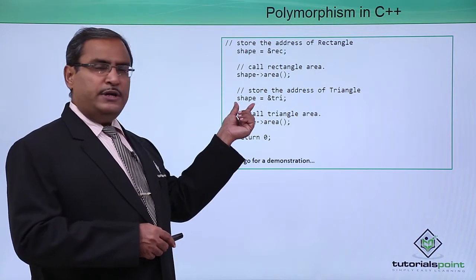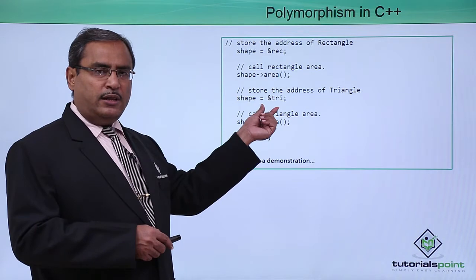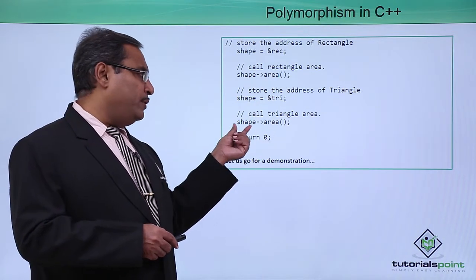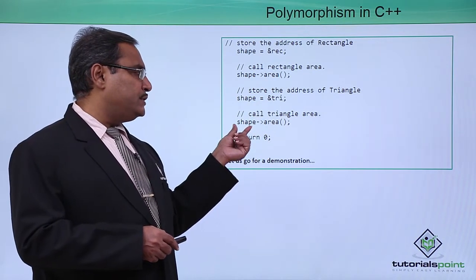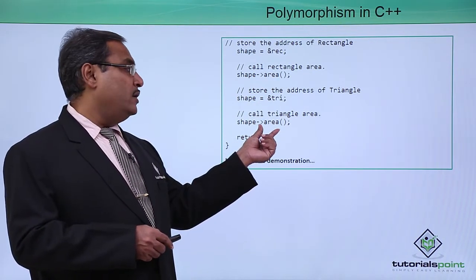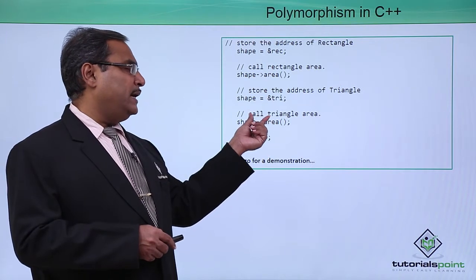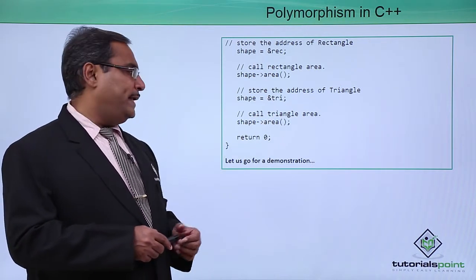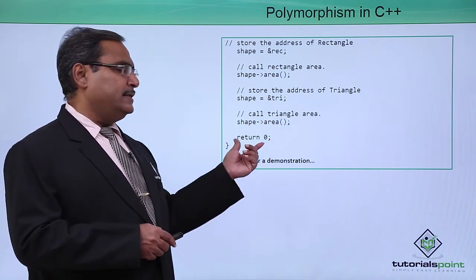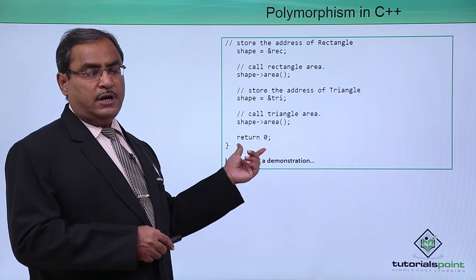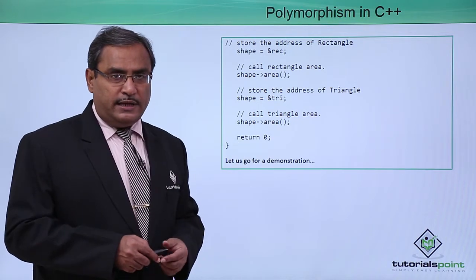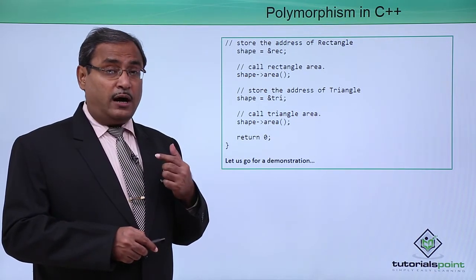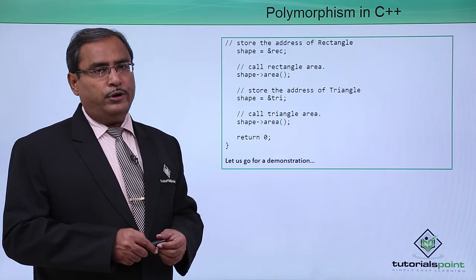Here we have initialized shape with the Triangle object's address. So whenever we call shape implies area, we are expecting that the Triangle area function will be called. Now let us see in practice what output we are going to get.